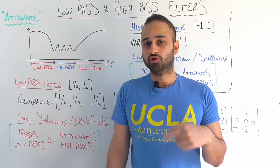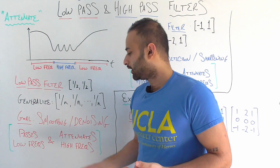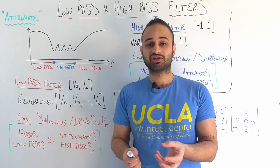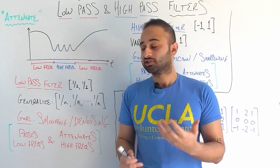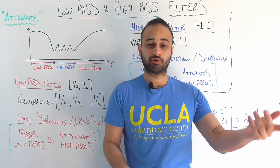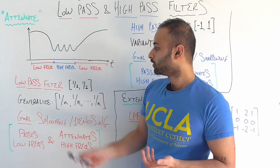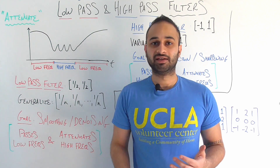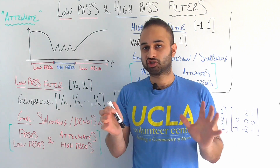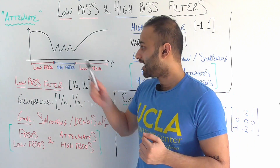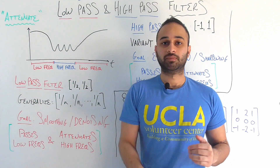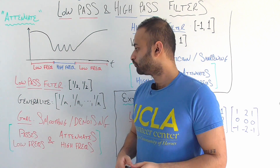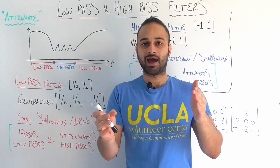The first class of transformations is the low-pass filter. The goal of a low-pass filter is to smooth or de-noise. In terms of frequency, we want to take areas of high frequency and smooth them out, because when using a low-pass filter you think of high frequency areas as noise. More officially, a low-pass filter passes the low frequencies — it doesn't do much to them — but it attenuates the high frequency areas, making them less intense.